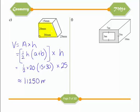Plugging that into the calculator gives 11,250 millimetres cubed. You may want to work out the area of the cross-section first — that's up to you.